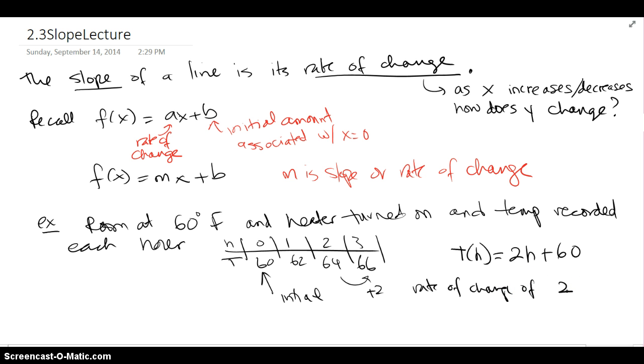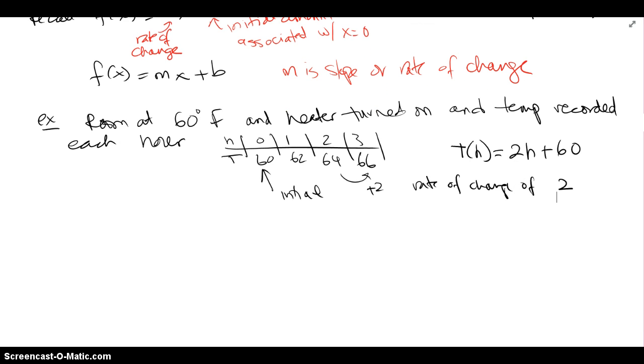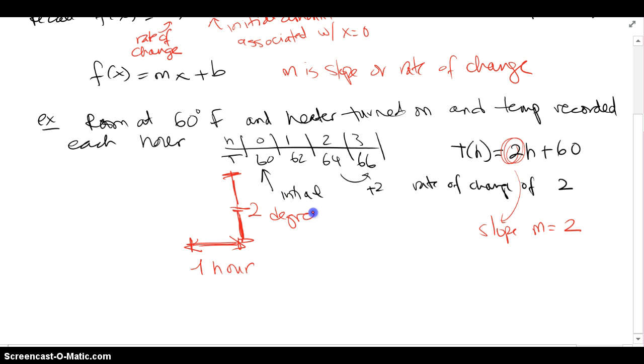So for every hour that went by, the temperature went up by 2 degrees. That value we were talking about is really the slope m. It basically tells you that for every horizontal one hour that goes by, the temperature goes up by 2 degrees. 2 degrees per 1 hour is how the change is recorded, and that's my slope.